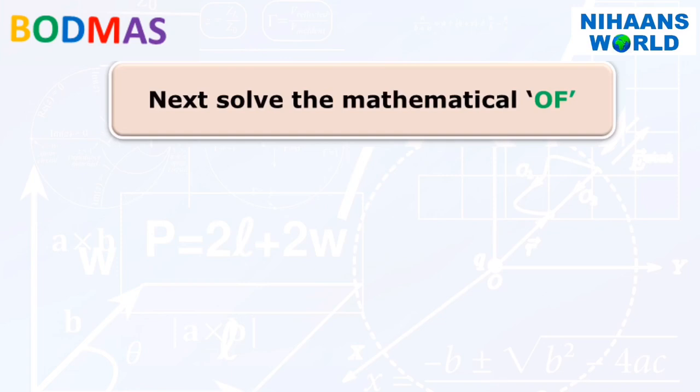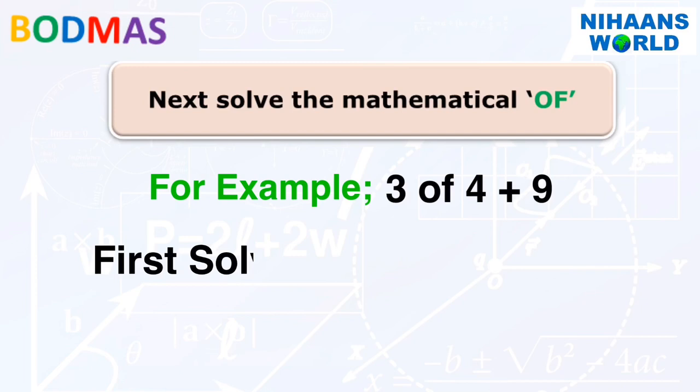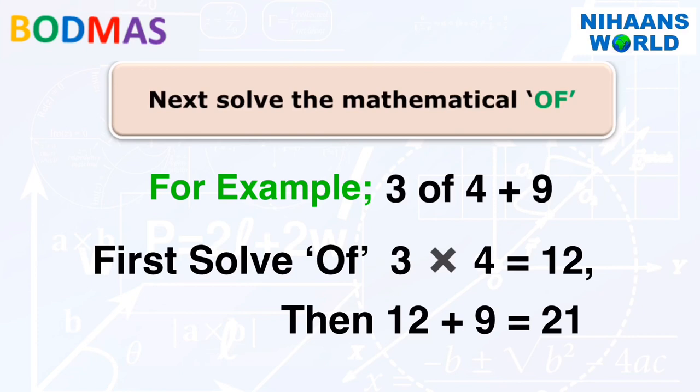Next, solve the mathematical of. For example, 3 of 4 plus 9. First, solve of: 3 multiplied by 4 is equal to 12. Then, 12 plus 9 is equal to 21.